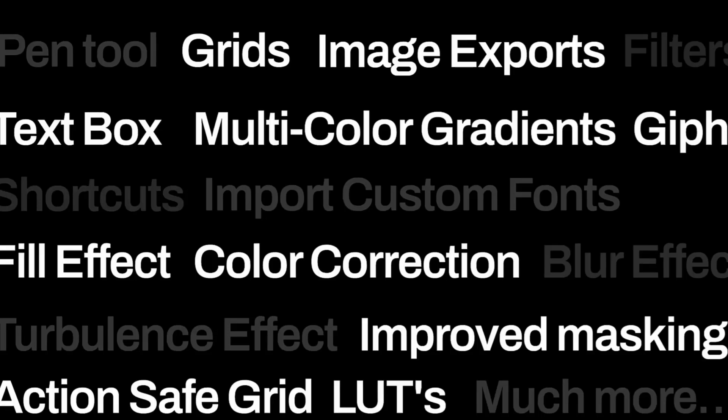Here is a massive list of other features not yet covered: a pen tool to create your own shapes, grids, image export, filters, a text box with a text shape background, a multi-color gradient where you can add as many gradient colors as you like by clicking on the gradient bar, Giphy integration, and a keyboard shortcuts menu with loads of shortcuts to speed up editing. You can input custom fonts quickly and easily. There's also a fill effect, color correction, blur effect, a turbulence effect, and improved masking. You're really going to enjoy this and many other things you'll discover when you open the app — it's a lot smoother and everything is faster and easier to use.